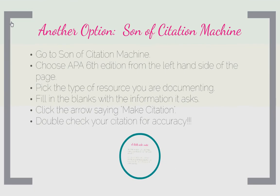Another option is using Son of Citation Machine. I'd advise you use this, but only after you've put a couple of citations together and know how they're set up, because you do need to double check your work. Go to the website, choose APA 6th edition on the left-hand side. Then pick the type of resource you're documenting — if it's a book, click book; if it's a webpage, click webpage; if it's a newspaper, click newspaper, and so forth. It will give you a set of blanks to fill in. Type your information exactly how it's written on your source and fill in the blanks. Then click 'make citation' and it will generate the citation for you to cut and paste into the works cited page. But double check — sometimes they make little errors and take shortcuts that aren't really allowed.